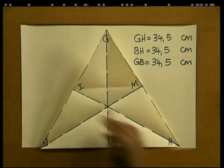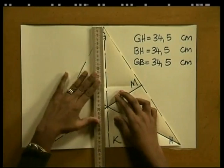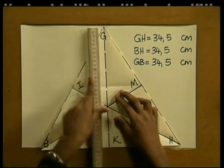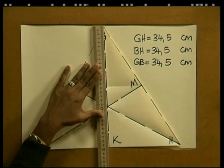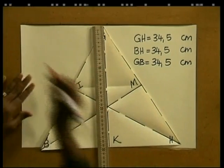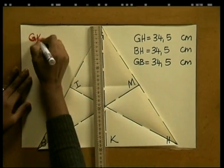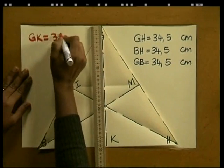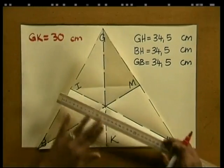The equilateral triangle has three lines of symmetry. I have drawn in all the lines of symmetry. Let's now take our ruler and measure the length — we see that GK is equal to 30 centimeters. Let's measure the other two lines of symmetry.